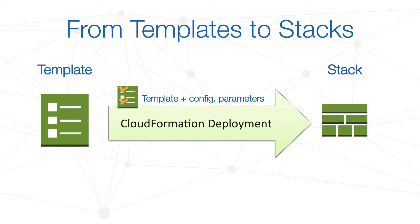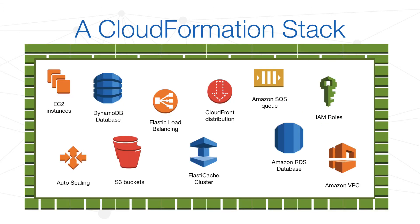AWS CloudFormation uses the word 'stack' to identify a specific infrastructure — that is, a collection of well-configured AWS resources. Each CloudFormation stack has a unique name and a linked template with a specific configuration. When you create a new stack, you can keep track of the infrastructure deployment, delete it, or check its live status and collected logs.